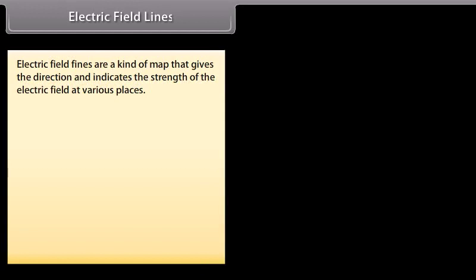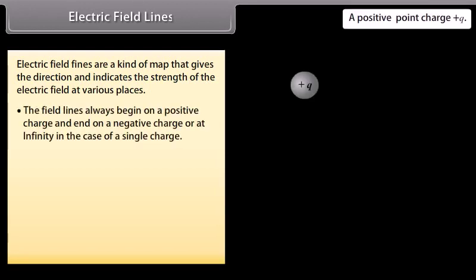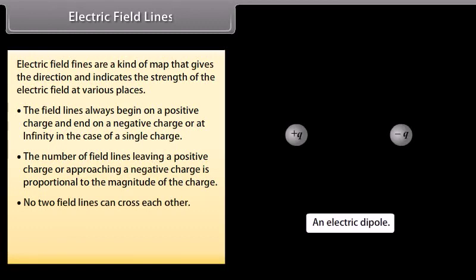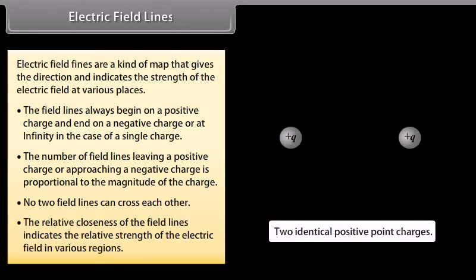Electric field lines are a kind of map that gives the direction and indicates the strength of the electric field at various places. The field lines always begin on a positive charge and end on a negative charge or at infinity in the case of a single charge. The number of field lines leaving a positive charge or approaching a negative charge is proportional to the magnitude of the charge. No two field lines can cross each other. The relative closeness of the field lines indicates the relative strength of the electric field in various regions.